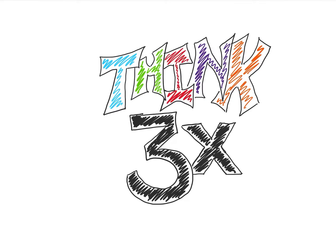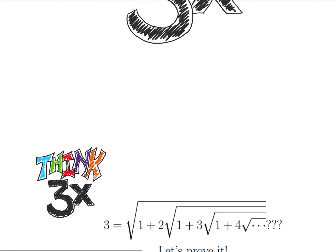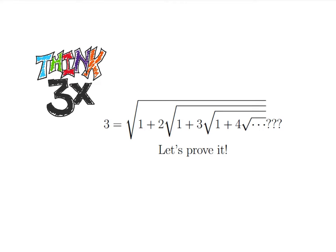Welcome back to Think Thrice Problem Solving. Today we're going to be looking at a very fun problem posed by a famous Indian mathematician, Ramanujan — a few centuries ago. He posed that x is equal to the square root of 1 plus 2 times the square root of 1 plus 3 times the square root of 1 plus 4, and so on. He put this out and after a few months where nobody solved it, he posted the answer — x is just equal to 3.